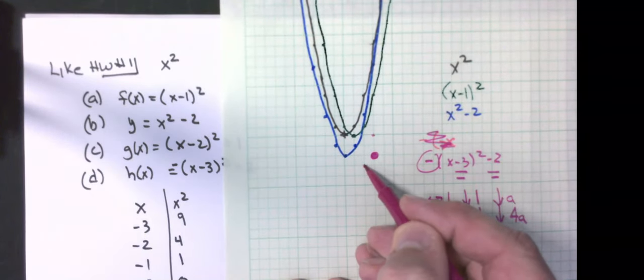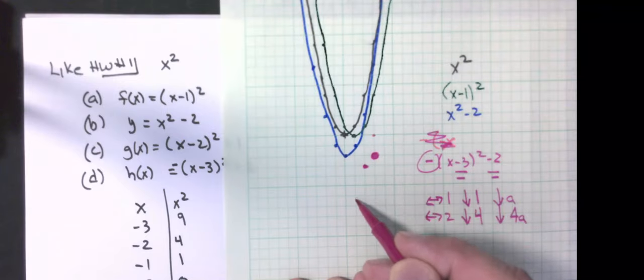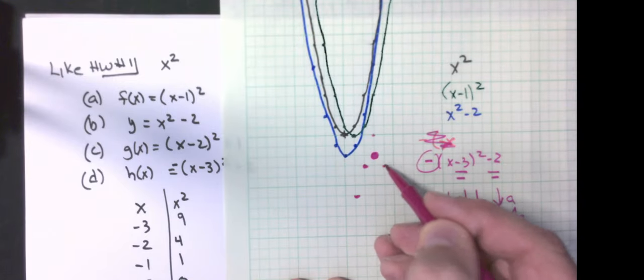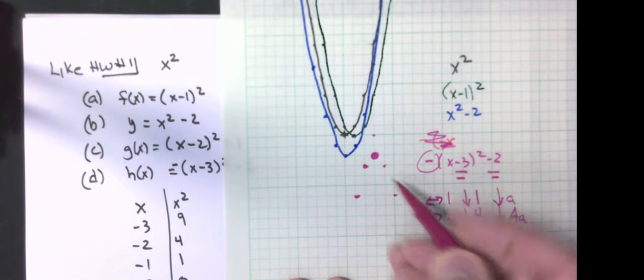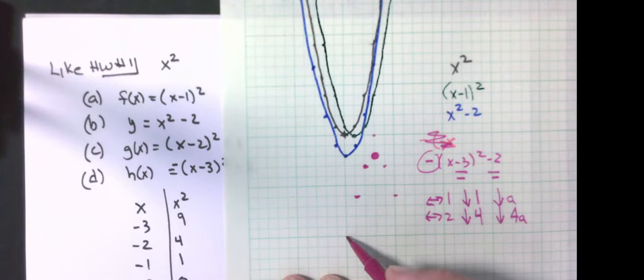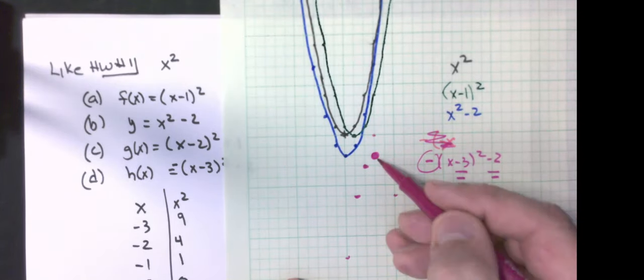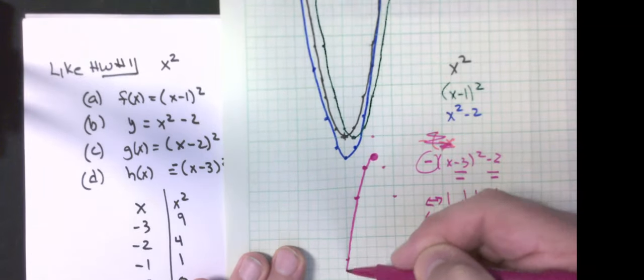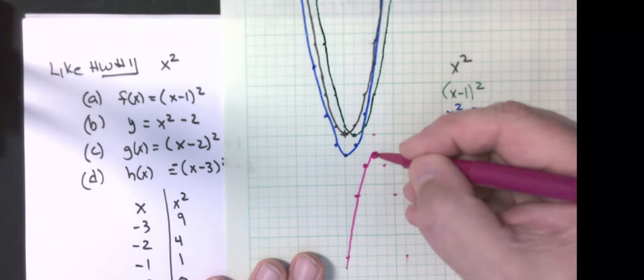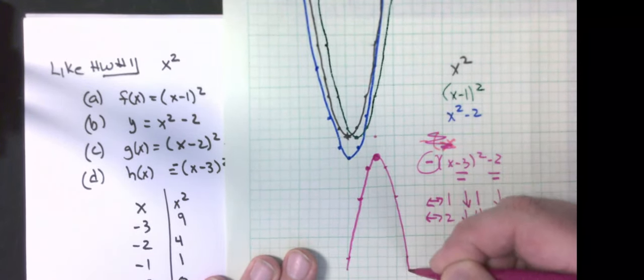Let's get my points there. Over one, down one. Over two, down a total of four. Down one, down four. Over three, down a total of nine. So seven, eight, nine. Seven, eight, nine. That would be the graph of that function.